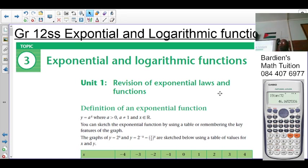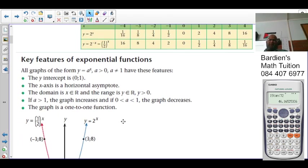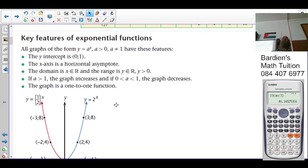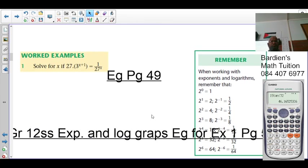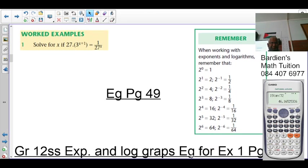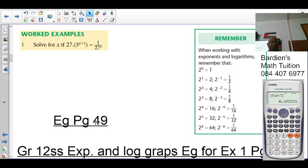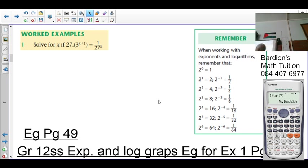We spoke about and read through the definitions and all those things. We spoke about the key features of the exponential graphs. If you want the full lesson, you can find it in the description box below. That was on page 48. We're looking at the examples on page 49, the examples for exercise 1, which are on page 50. The question says solve for x if 27 times 3 to the x plus 1 equals 1 over 27 times the exponent x.